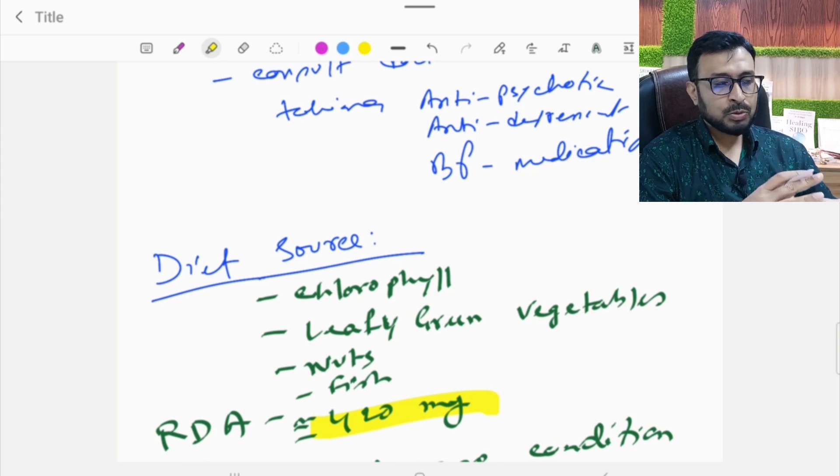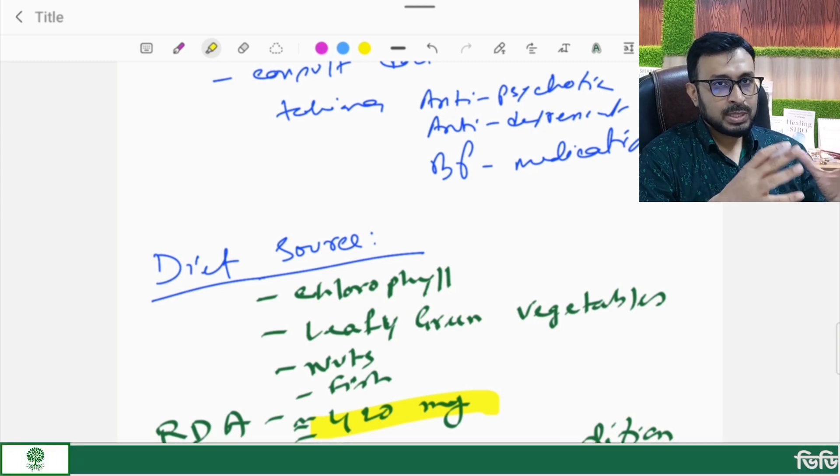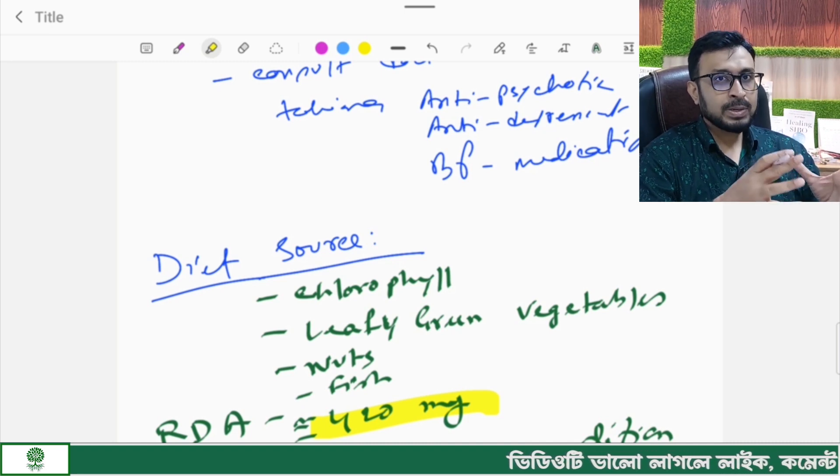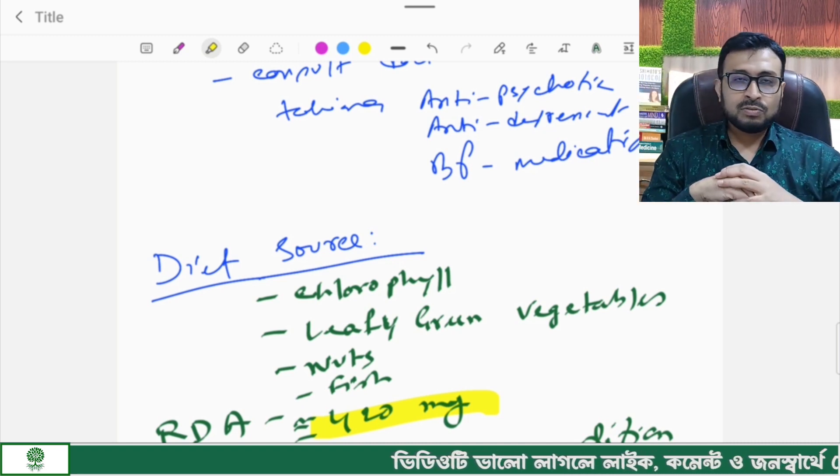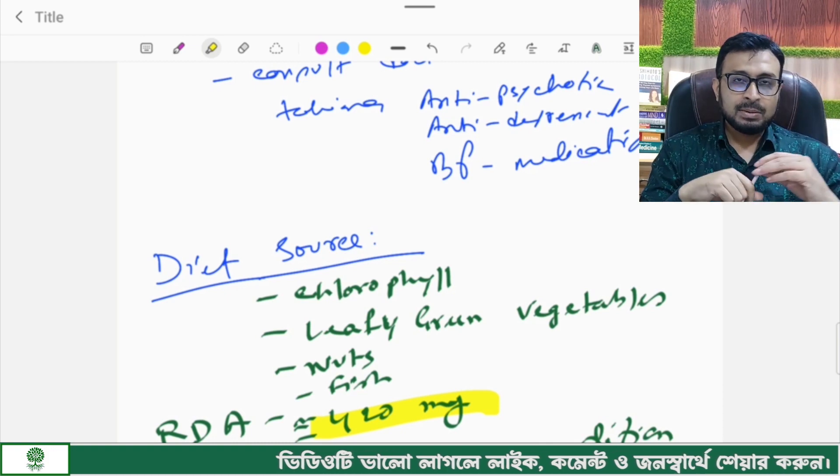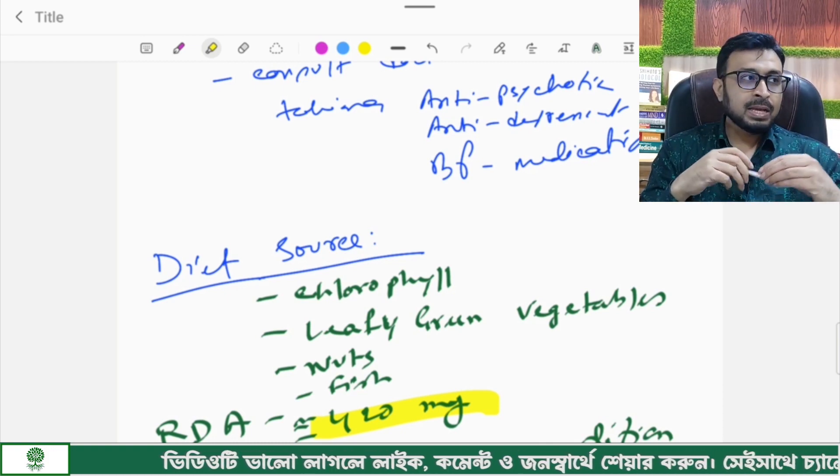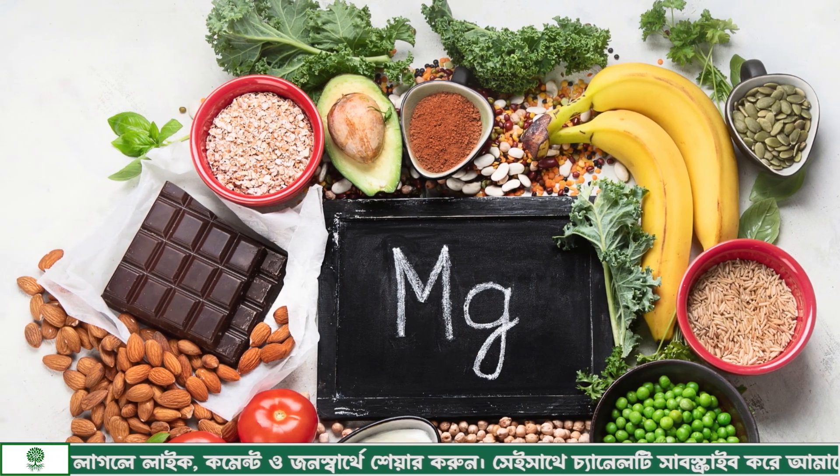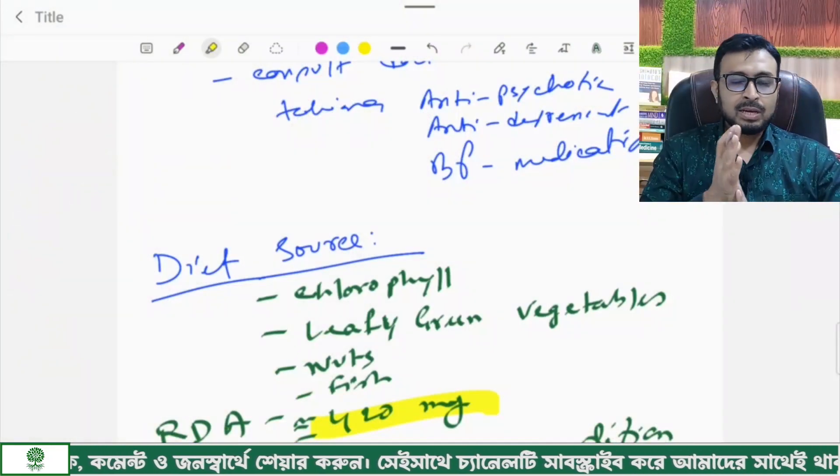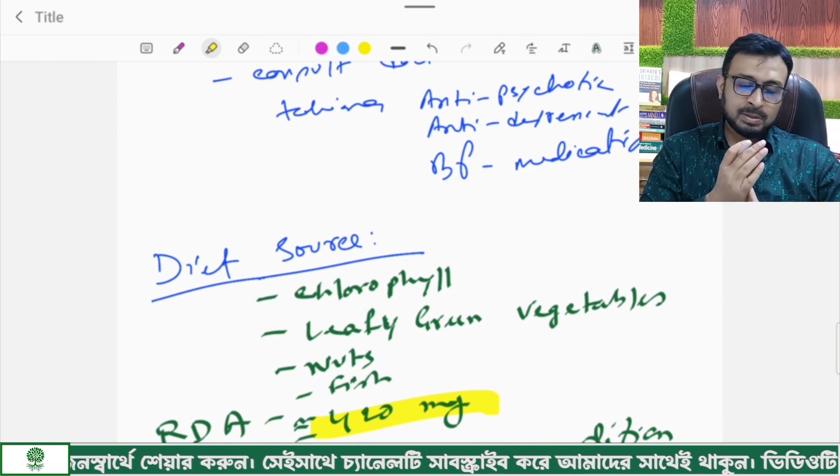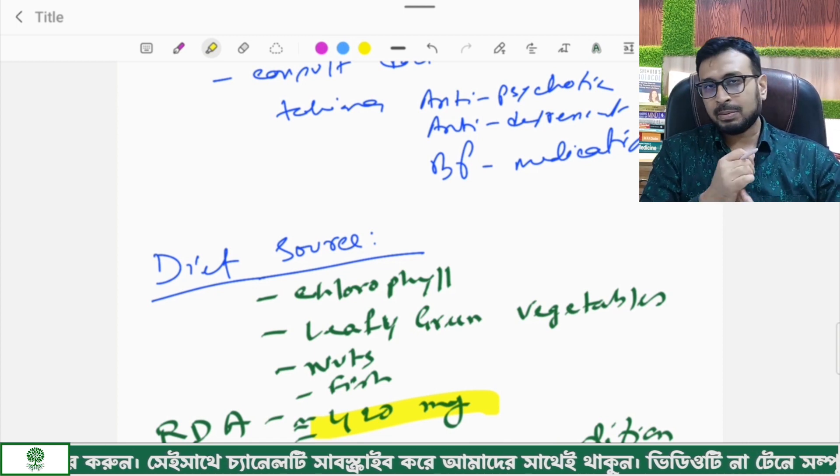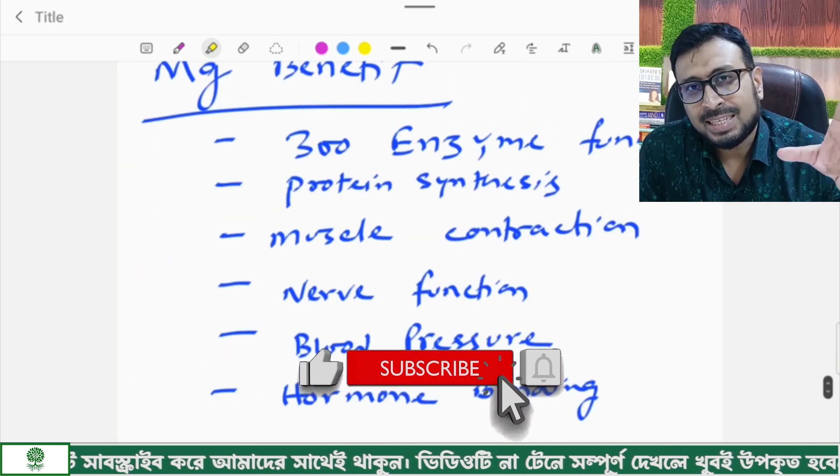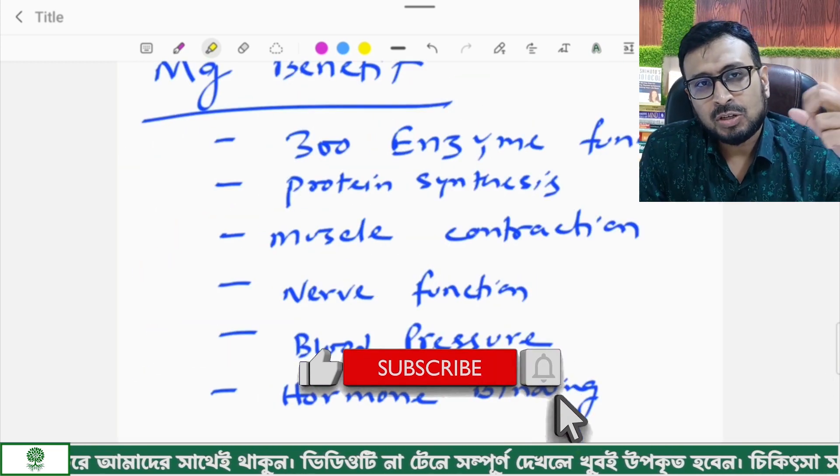These are dietary sources. Green leafy vegetables contain chlorophyll and magnesium. In the human body, chlorophyll is used similarly to blood. In plants, chlorophyll contains magnesium in its center. When you eat green leafy vegetables, you can get magnesium. When you cook magnesium-rich foods in water, some magnesium leaches out.